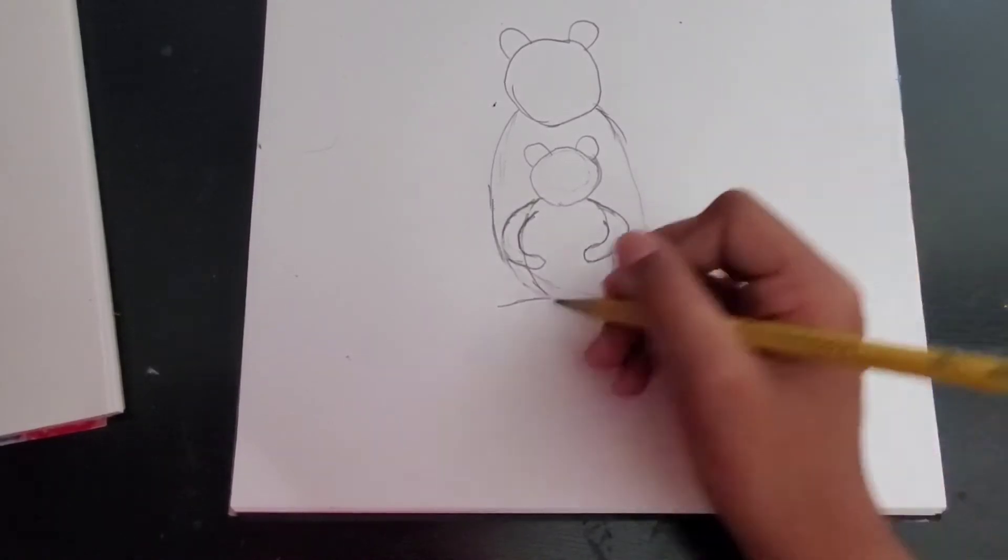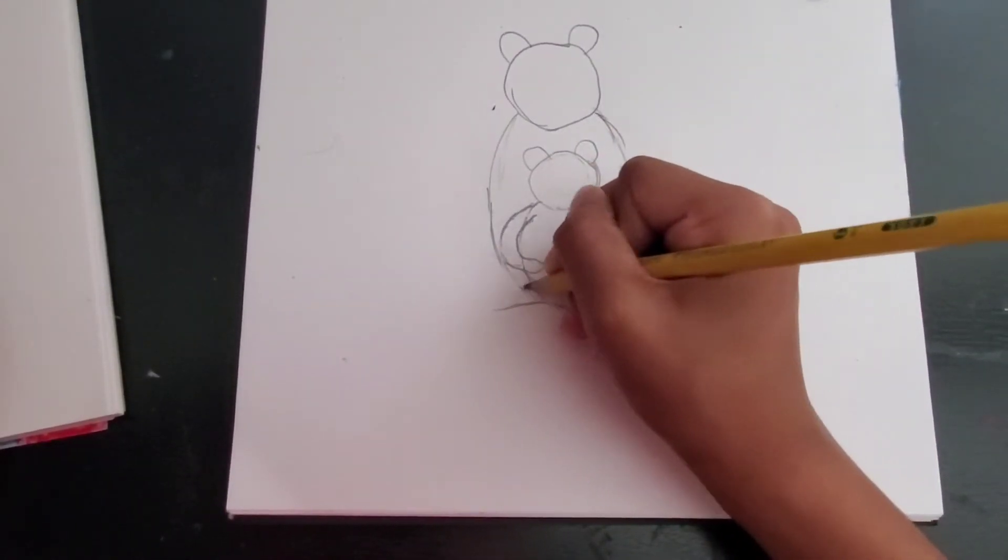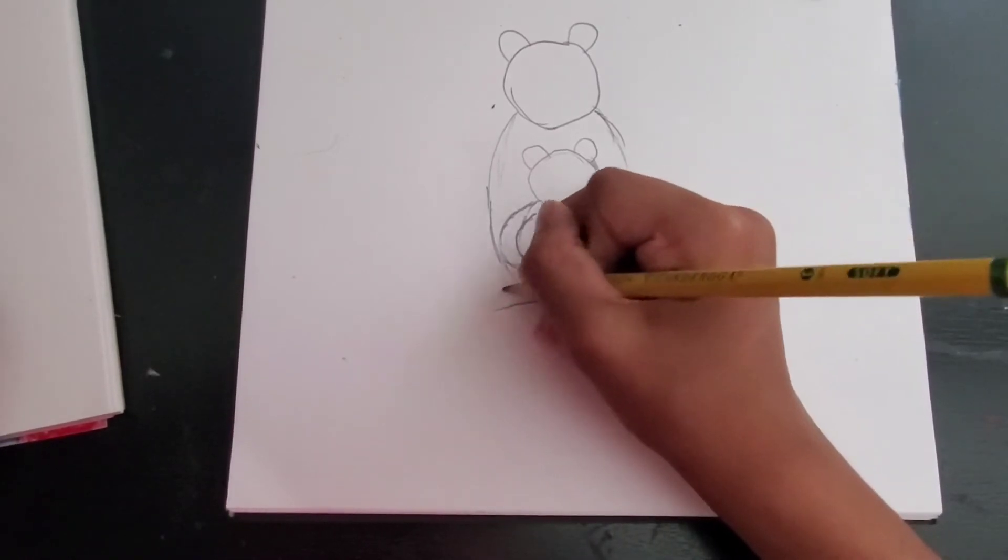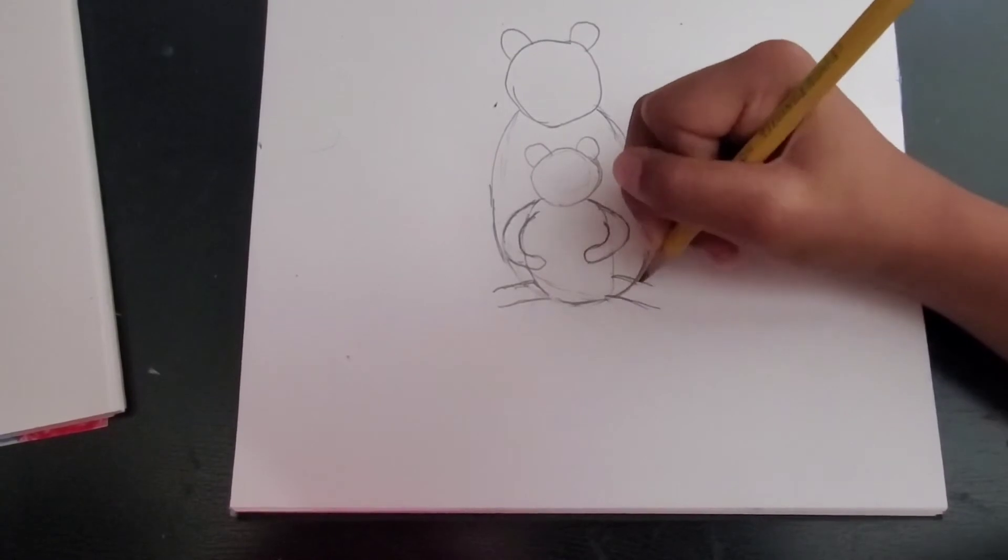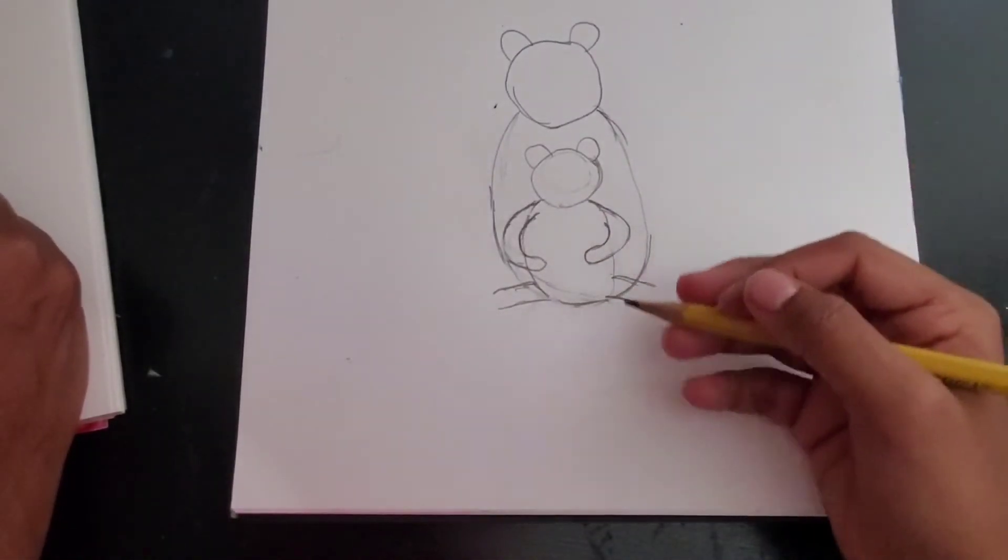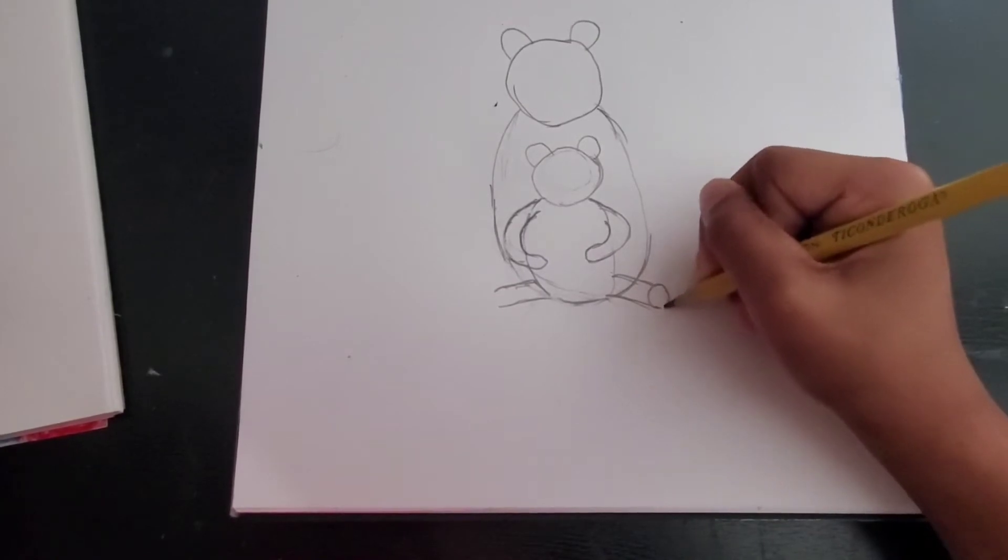So then make one more line on the top. And then make circles for his paws.